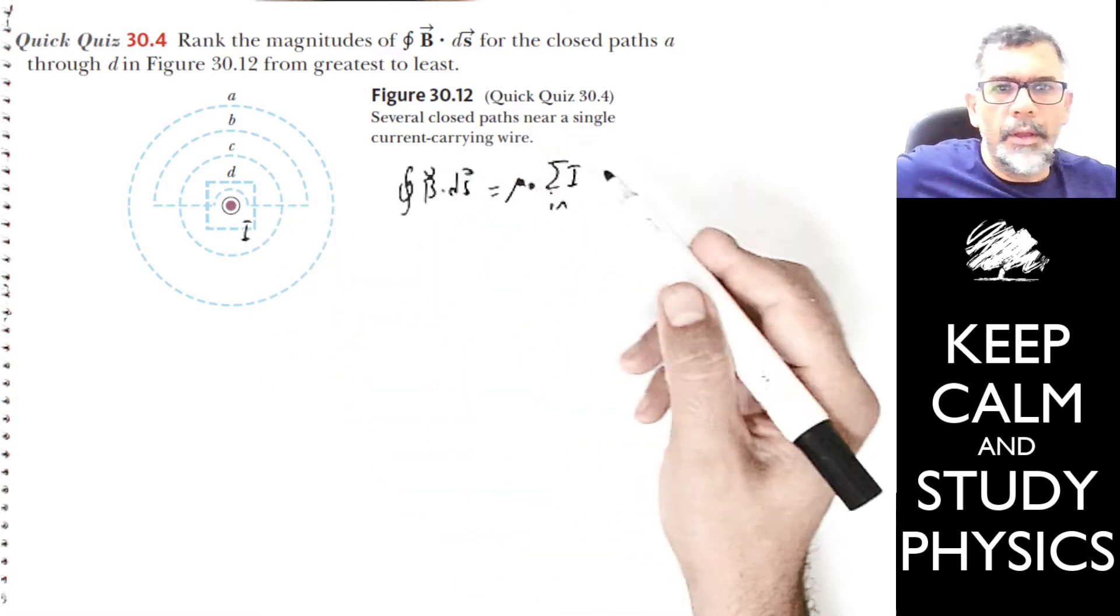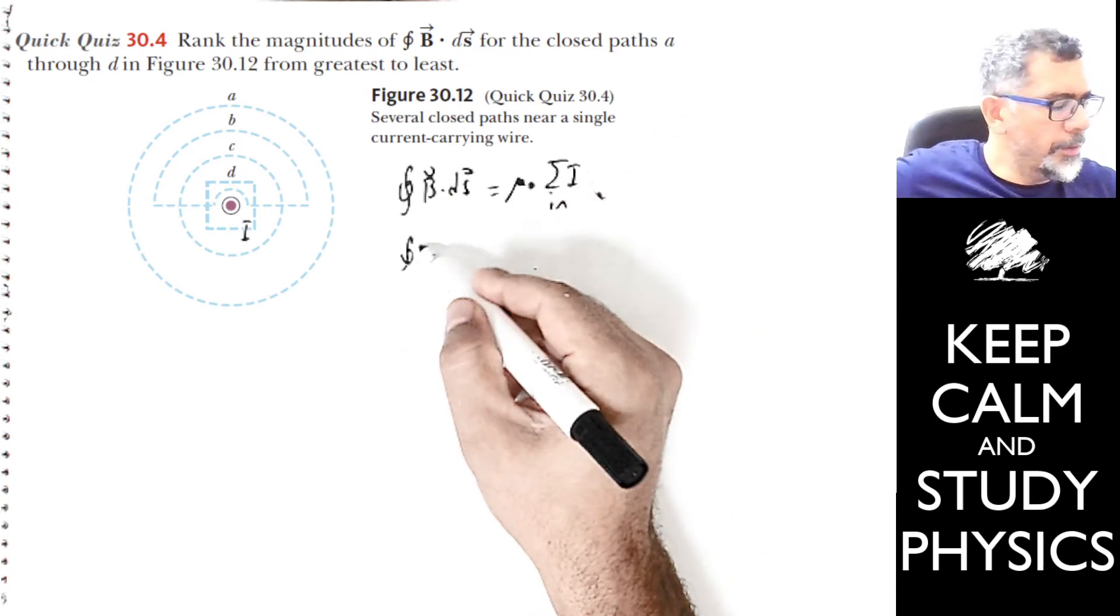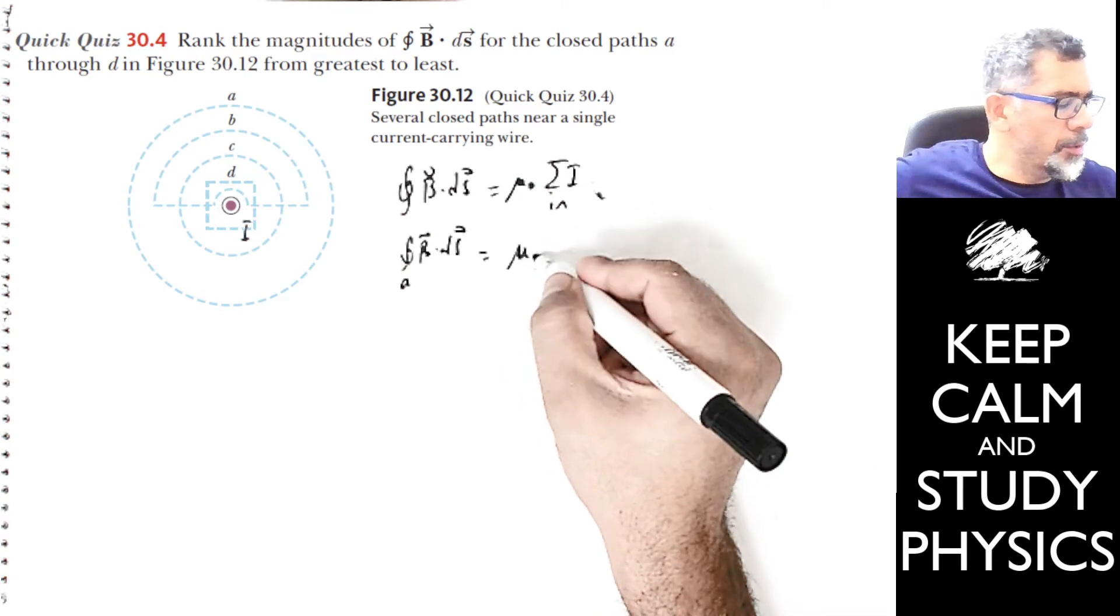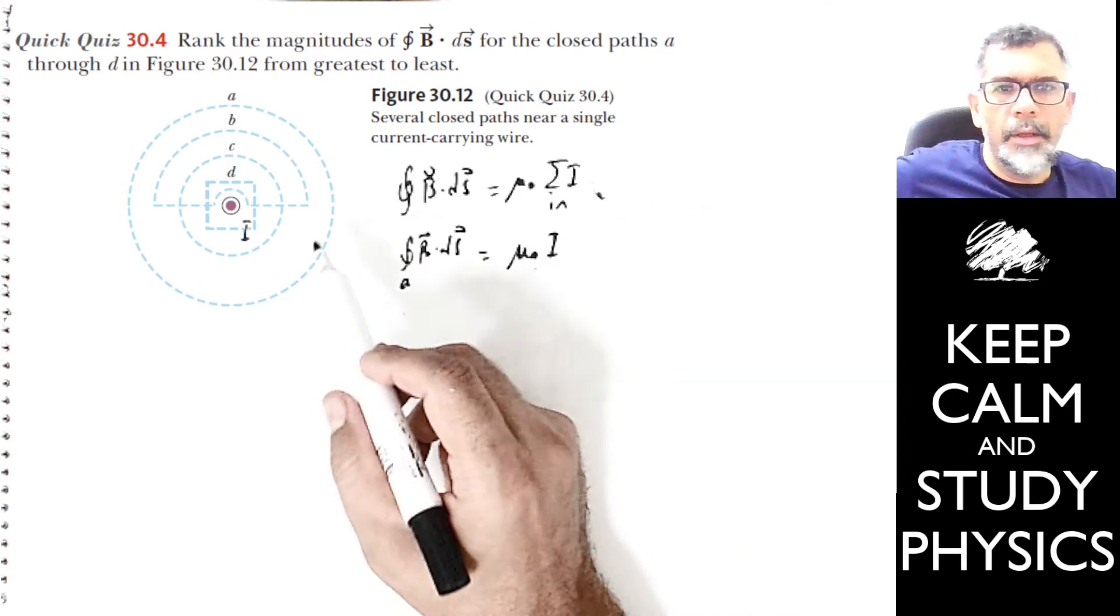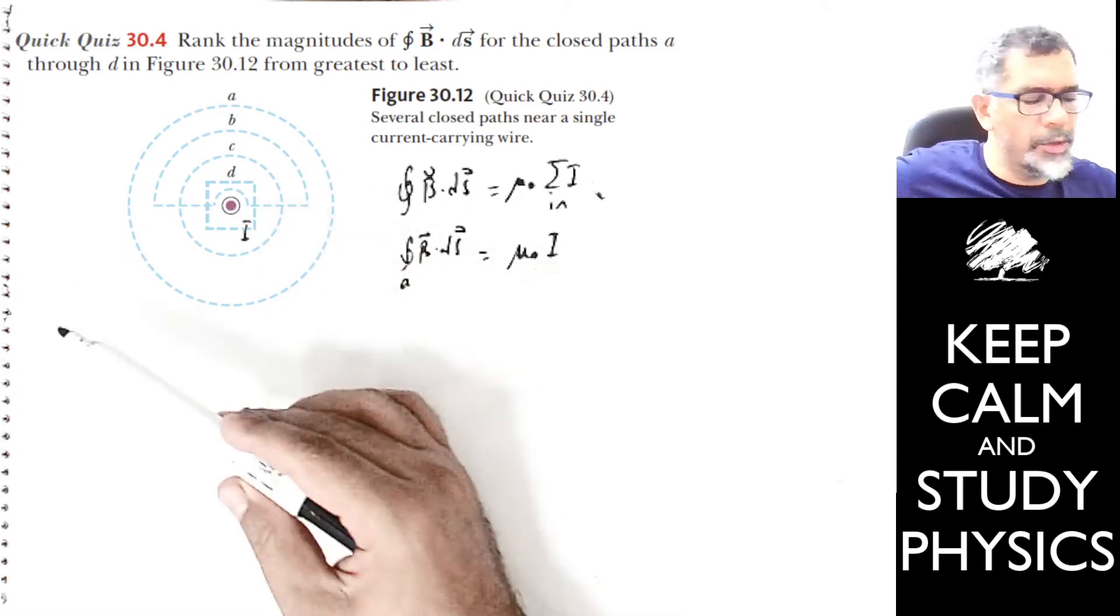So the result for path A, B·dS, is mu₀I, and it is positive because the current is out of the page.